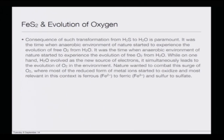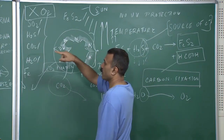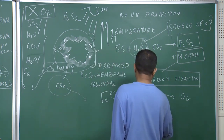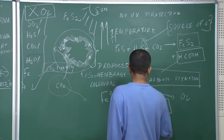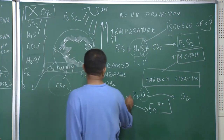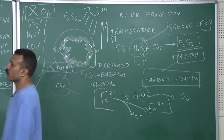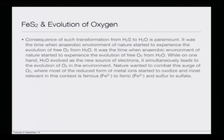The situation from anaerobic was moving towards an aerobic environment. It was the time when the anaerobic environment of nature started to experience the evolution of free oxygen from water, while water evolved as a new source of electrons and simultaneously led to the evolution of oxygen in the environment. Nature wanted to combat that surge of oxygen. Most of the reduced form of metal ions started to oxidize — most relevantly, Fe²⁺ present in iron disulfide became Fe³⁺, giving away an electron.